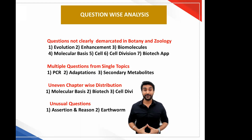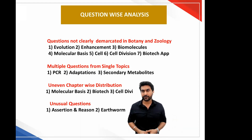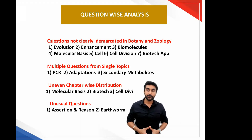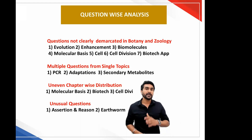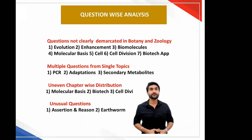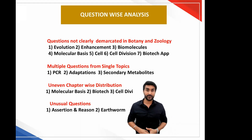Another new thing was the presence of assertion-reason type questions, which are not usually asked in NEET. So there were two types of unusual questions this year. One was the assertion-reason question, asked for the very first time according to the new NEET pattern — and it was asked in the optional section, so that was fine. The other was a question on earthworm, which is a bit controversial because even last year this happened. Earthworm has technically been deleted from the NEET portion, yet they asked it this year too — but it was in the optional part.